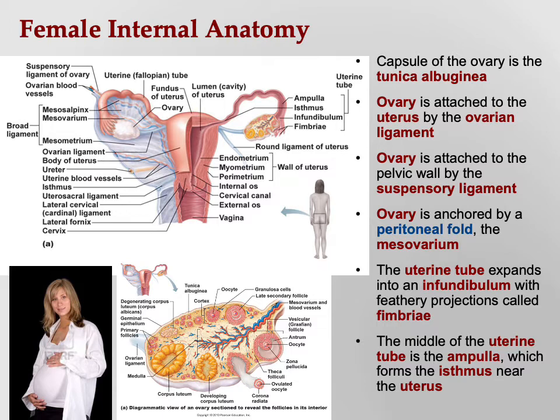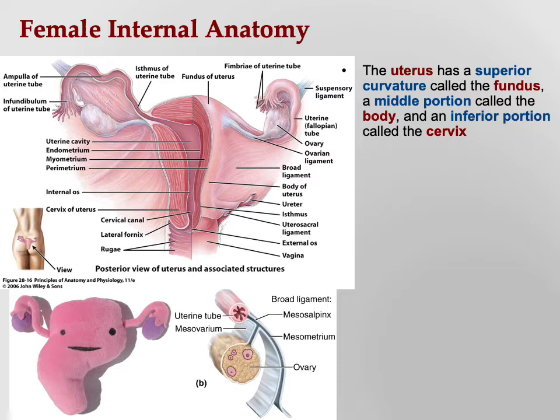The uterus has a superior dome-shaped top called the fundus — remember the stomach also had a fundus. The middle portion is called the body, and the inferior portion is called the cervix. Cervix means neck, so this is the neck of the uterus and the opening into the uterus.